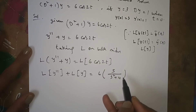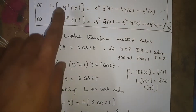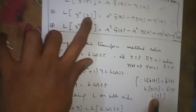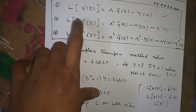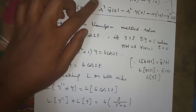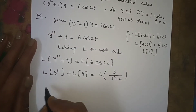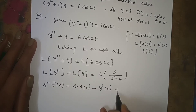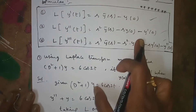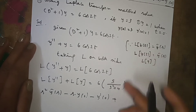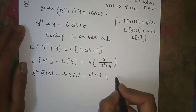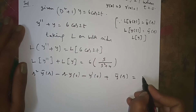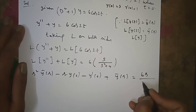L{cos2t} = s/(s² + 4), with the constant 6 outside. Now L{y''} = s²·ȳ(s) − s·y(0) − y'(0), and L{y} = ȳ(s). So the equation becomes: s²·ȳ(s) − s·y(0) − y'(0) + ȳ(s) = 6s/(s² + 4).